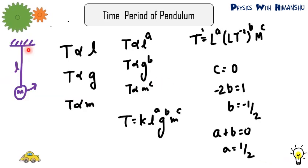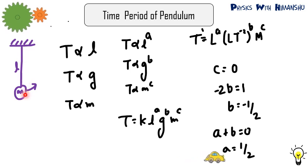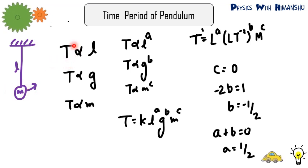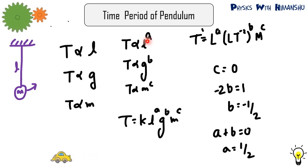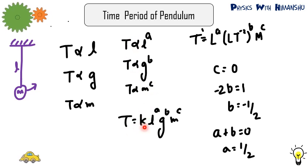Let us take one more example. Consider a simple pendulum with a bob of mass M and a string of length L. If we displace the bob slightly, it undergoes simple harmonic motion. Suppose it is given that the time period of this motion depends on length L, acceleration due to gravity G, and mass of the bob M. We assign power A to L, power B to G, and power C to M, then with constant K write: T equals K times L raised to A, G raised to B, M raised to C.